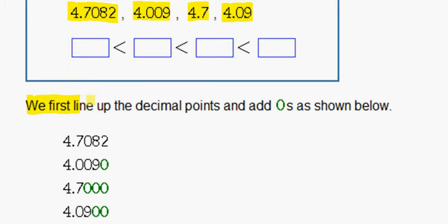We first line up the decimal points like this and add zeros as shown below. So we add zeros to these numbers to make them all come to the same place in decimals, the thousandths place.